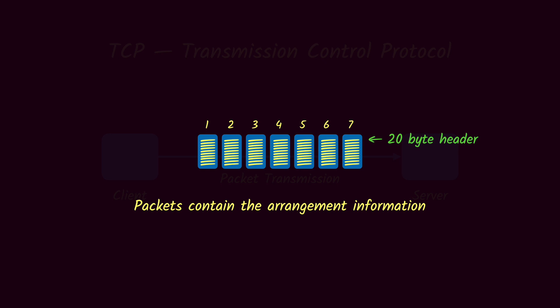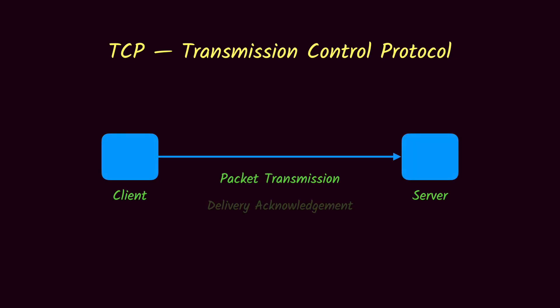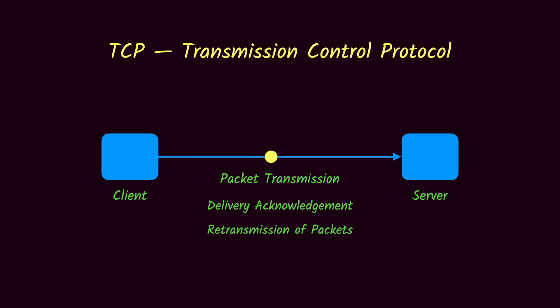Once packet transmission starts in TCP, each packet sent from the client to the server requires the server to send an acknowledgement back to the client confirming receipt. This delivery acknowledgement helps implement retransmission and reduce error rates. If the client sends a packet that gets lost and never reaches the server, the server won't send an acknowledgement, so the client will wait and then retransmit the same packet — making the chance of losing a packet very low.